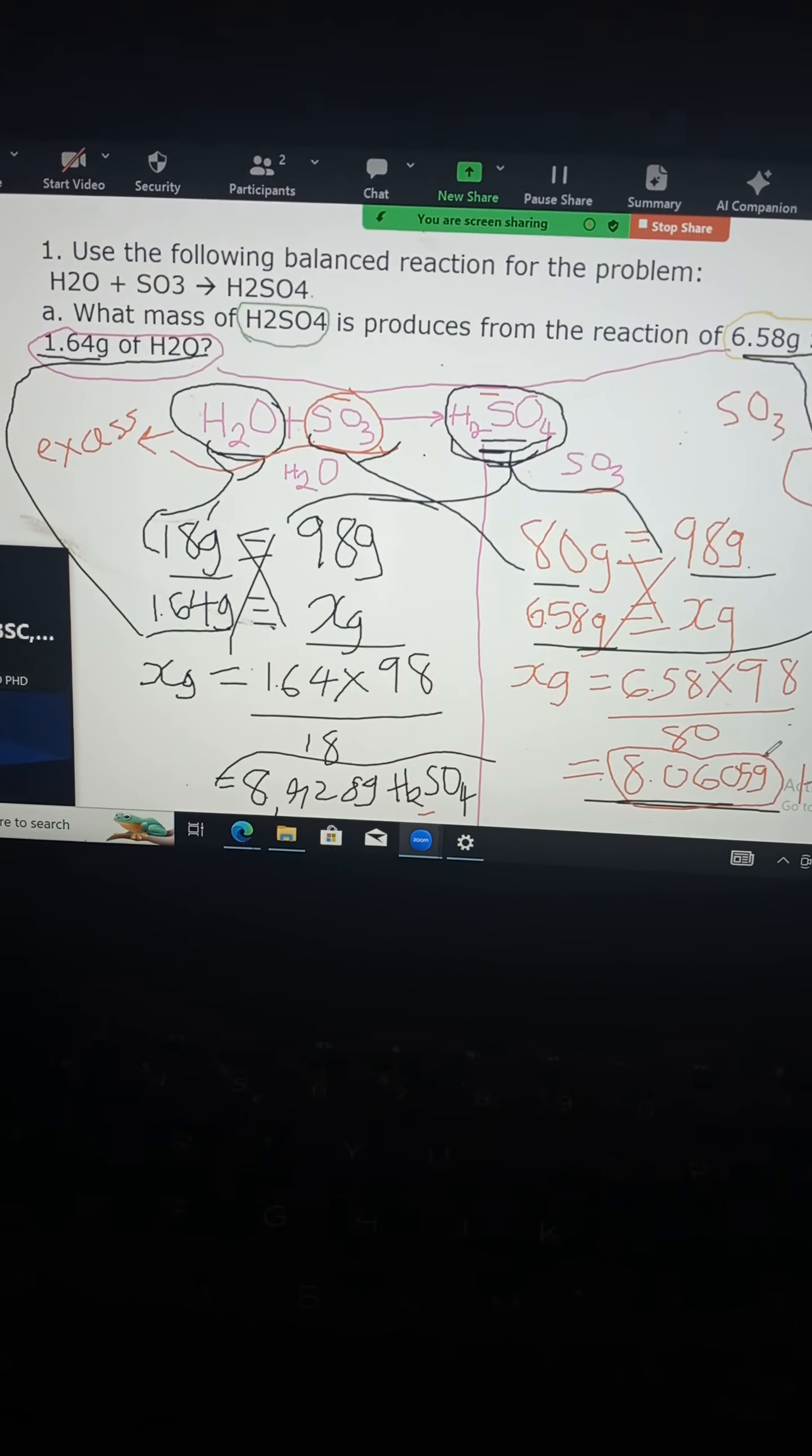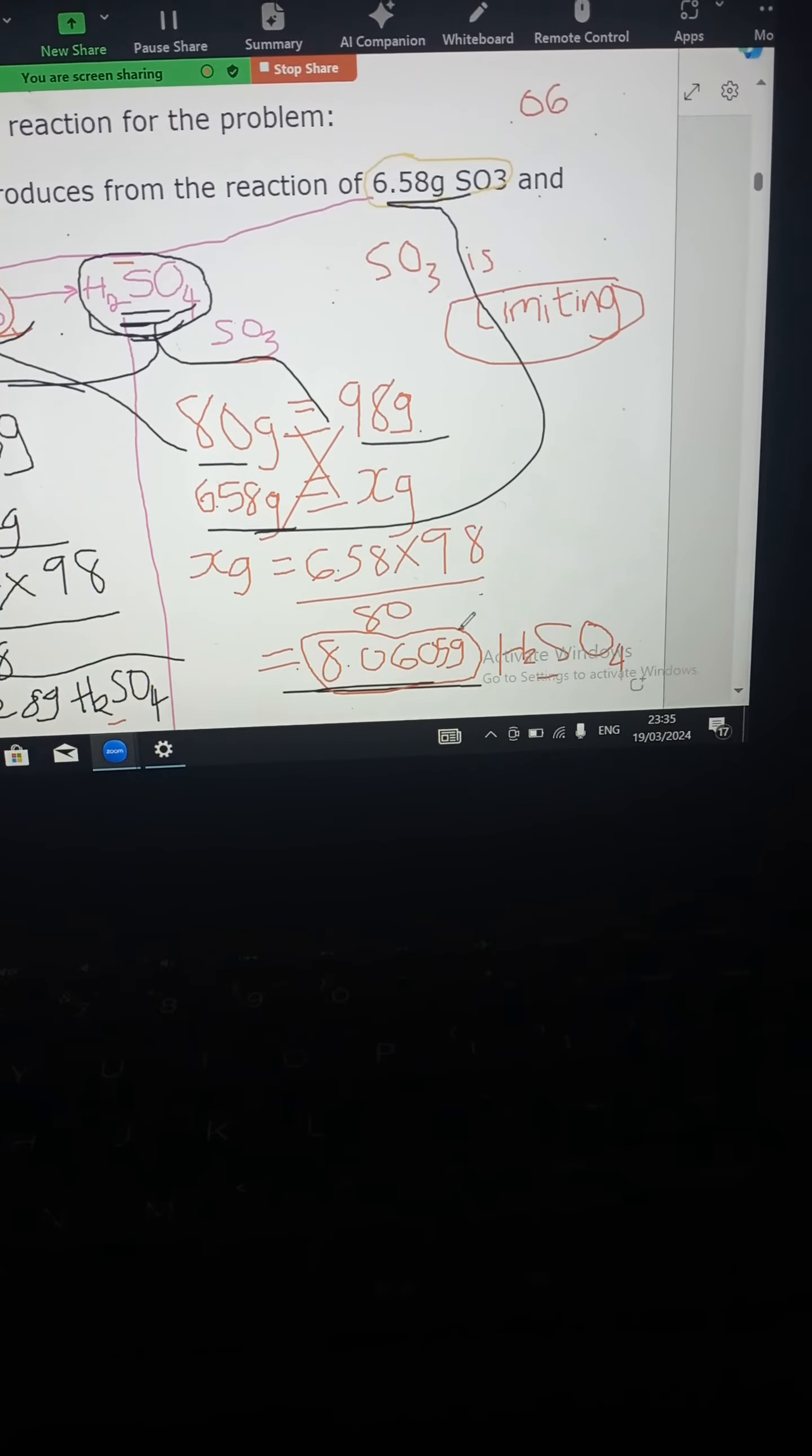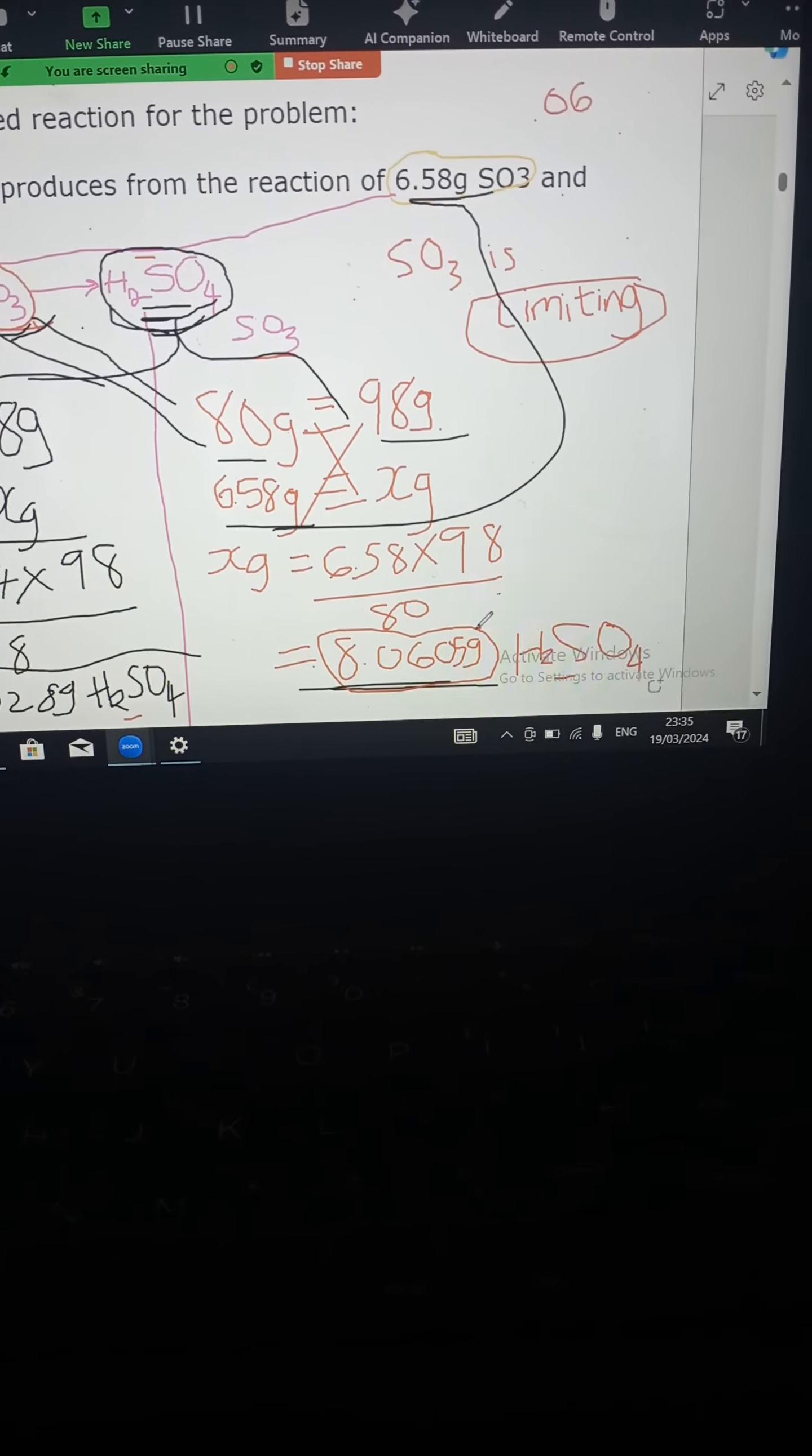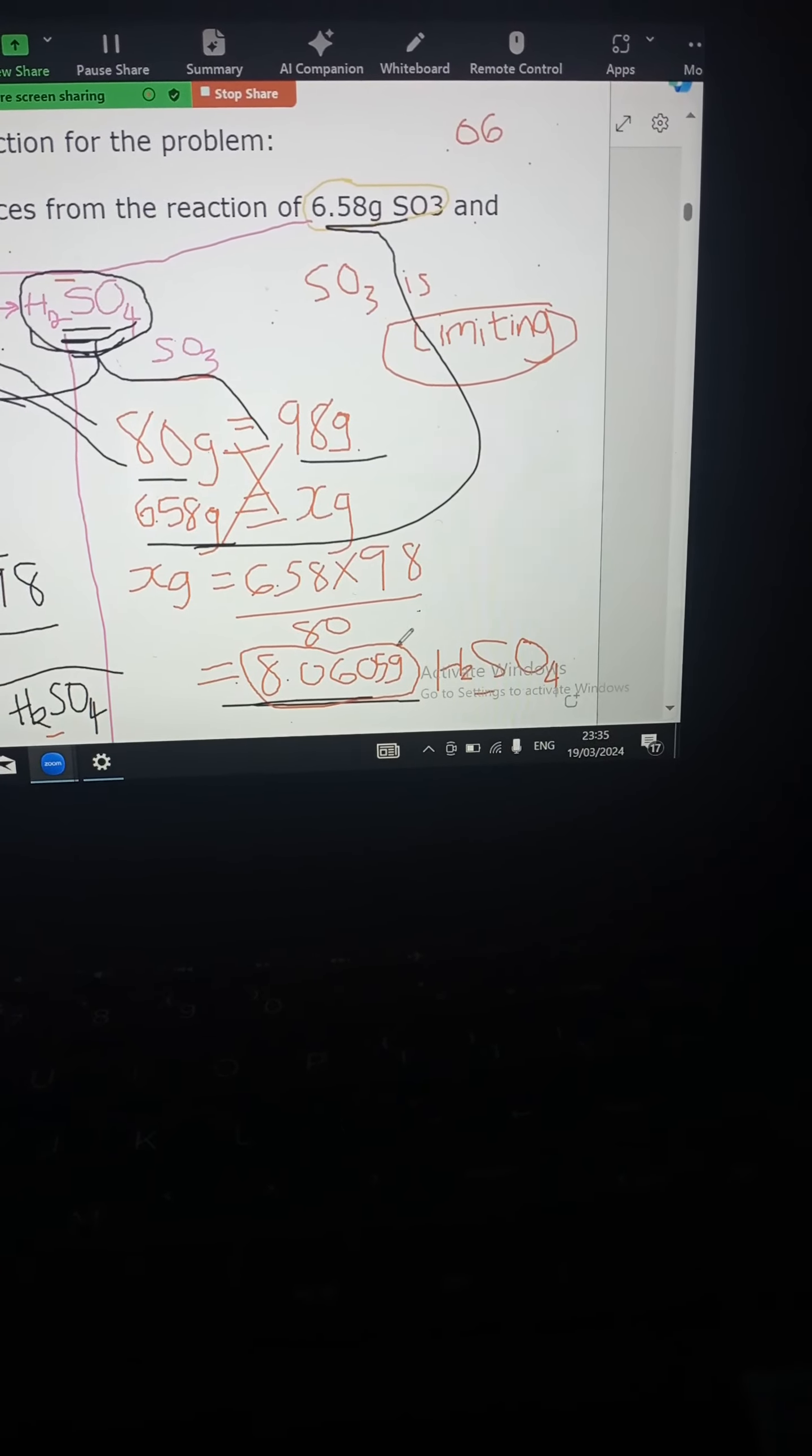Continue, you're doing well. Then you put X, you solve, and then do the same thing here, where 80 is from, it's the molar mass of SO3. And then 98 is the molar mass of H2SO4. And 6.58, because the question gives you that as a mass for SO3. And then you just solve.